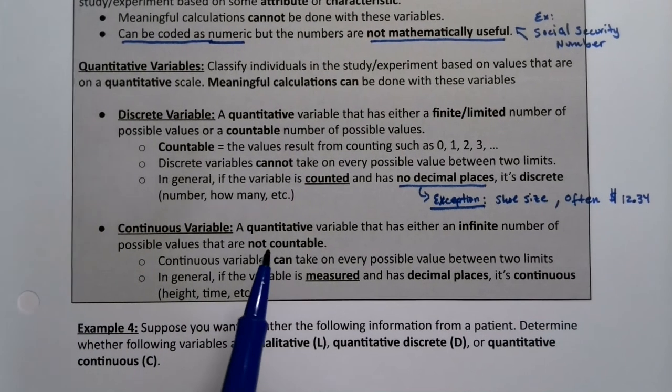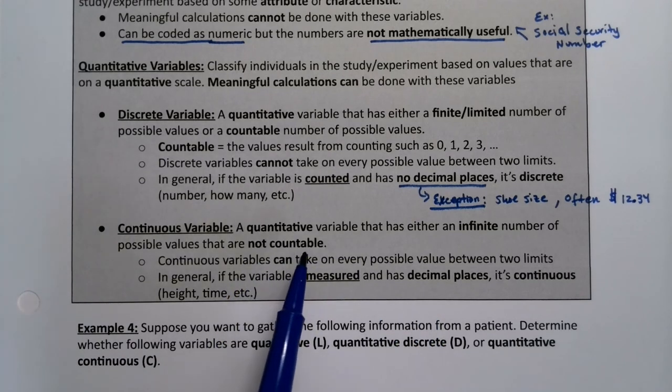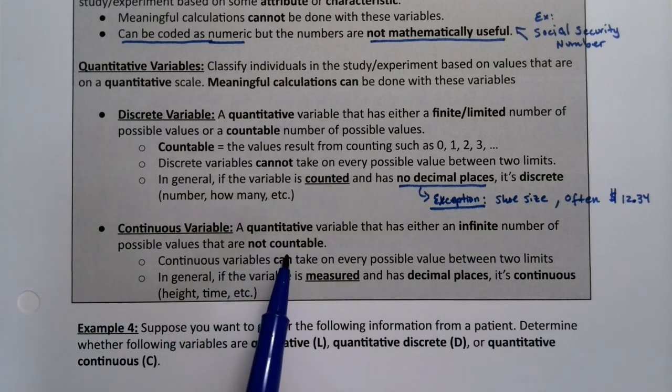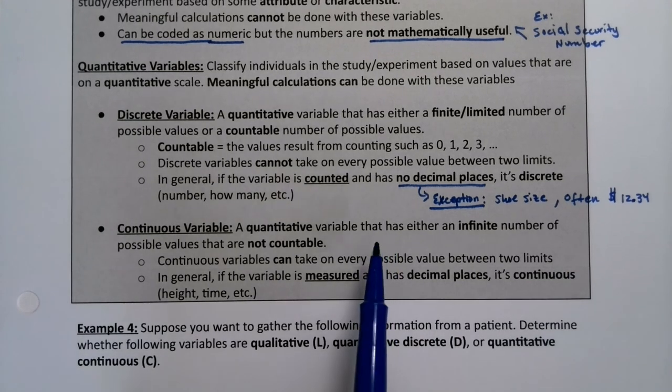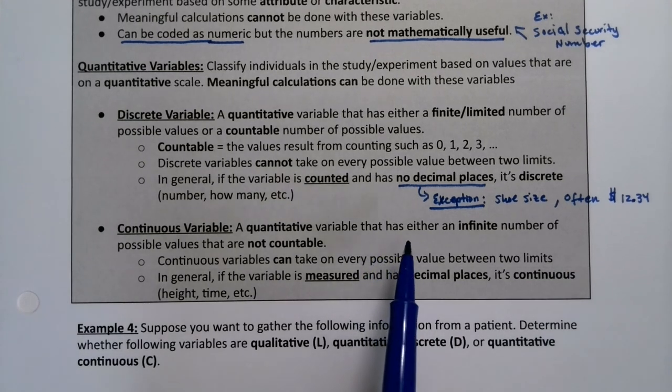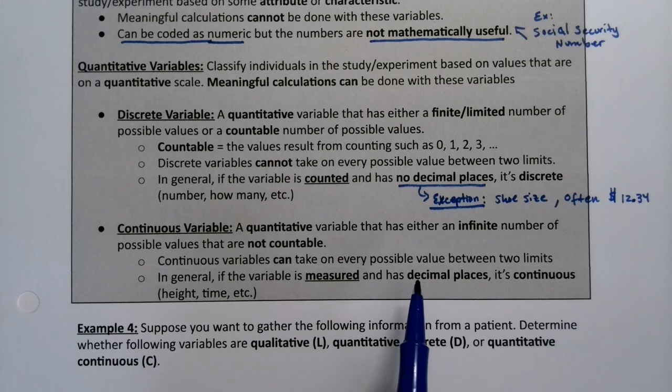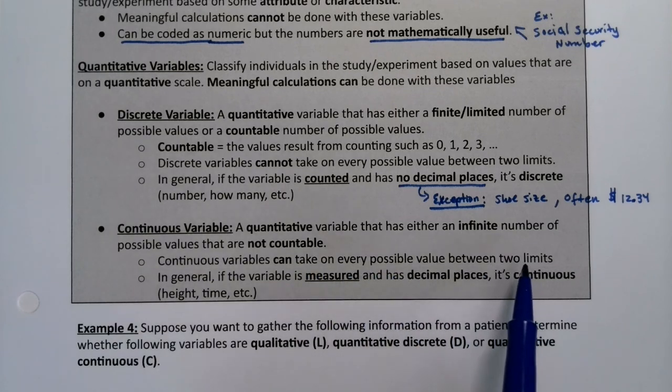Now a continuous variable has decimal places. But it's anything that is not countable. It has an infinite number of possible values that are not possible to be counted. So it could be 12.3614255. That's possible. That's a continuous variable. So it has decimal places. It could have more decimal places if you just have a better instrument for measuring. It can take on any possible value between two limits.